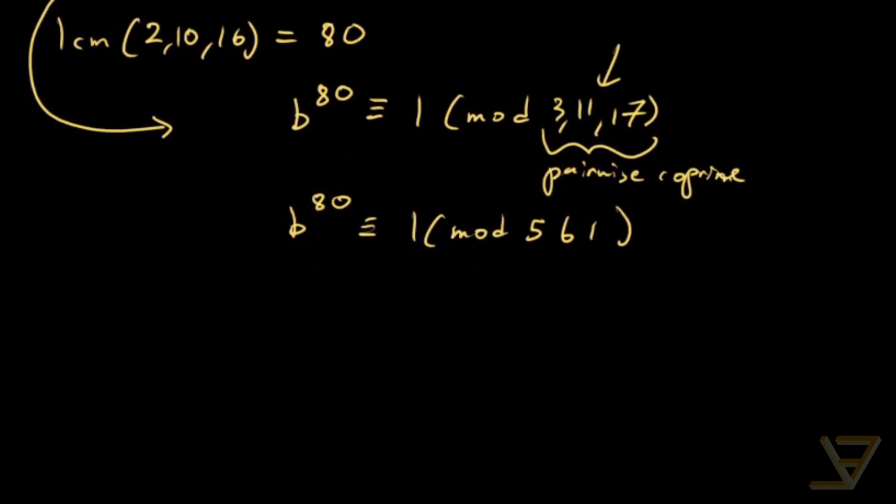And as a final step, we just take this to the power of 7, and we find that b^80^7 = b^560 ≡ 1 (mod 561). And then we're done.